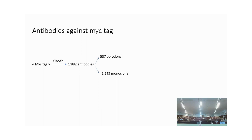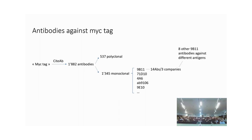If you type MYC tag in CITAB, which is a fantastic search engine, you find 1,800 antibodies. 500 of them are polyclonal, so each one of them is unique — if they use polyclonal antibodies, they use different antibodies. 1,300 are monoclonal, and then you get a long list of names: 9B11, 71D10, 4A6. Let's look, for example, at 9B11.